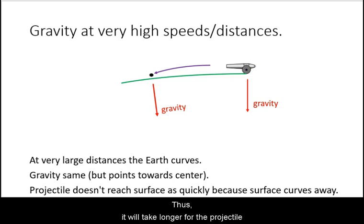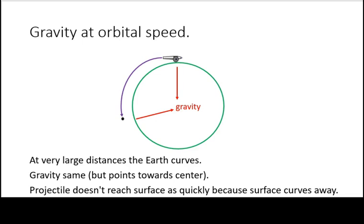Thus, it will take longer for the projectile to hit the ground. At very large distances and high speeds we need to consider the Earth to be a round sphere. The projectile keeps being pulled by gravity, but the ground keeps curving out from underneath.